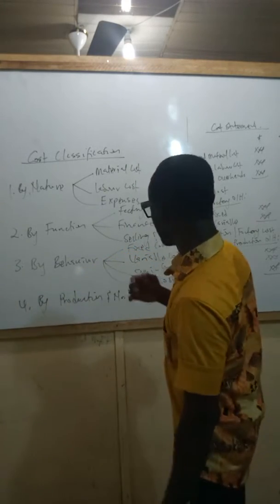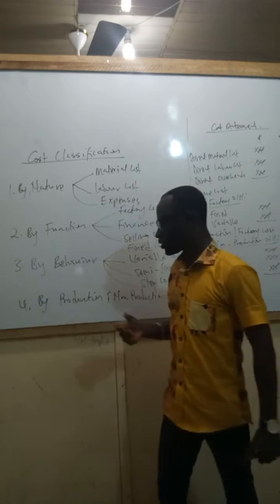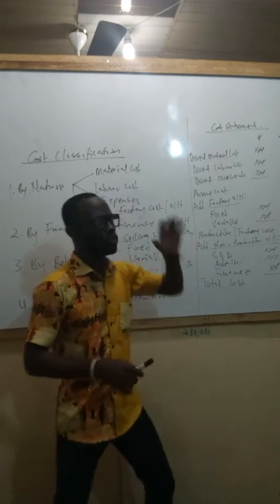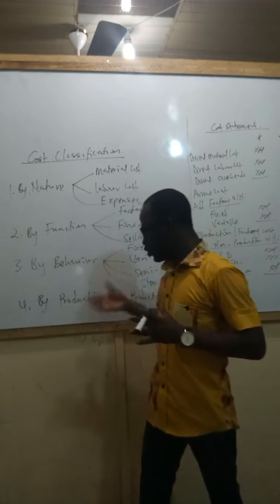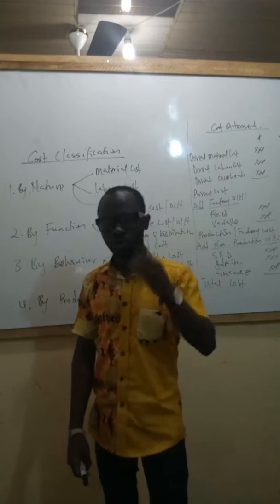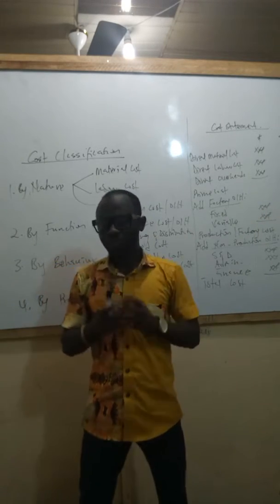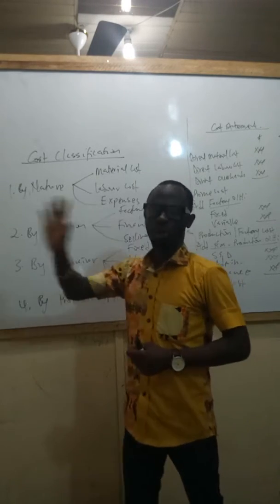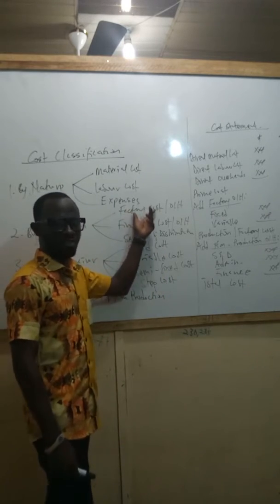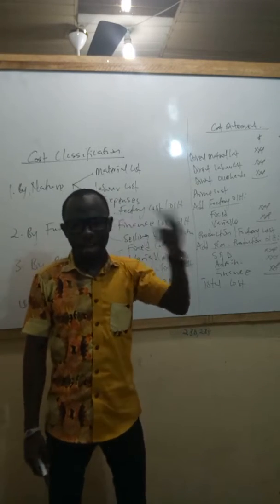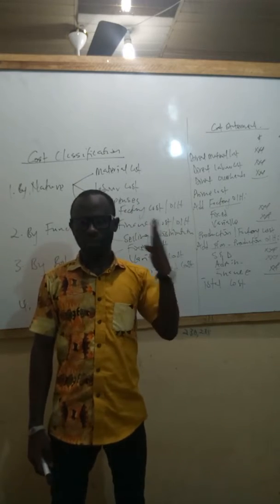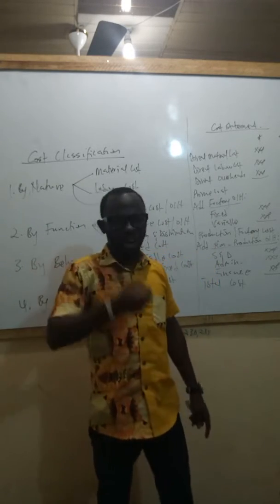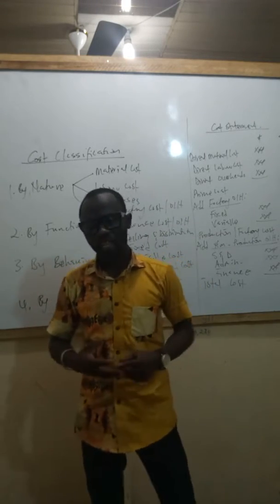The fourth base of classification is classification of cost according to production and non-production. This is where we classify all costs into production costs and non-production costs. When we incur a cost, we ask ourselves: does this cost relate to production? If it does, we classify it as production costs. If it doesn't relate to production, we classify it as non-production costs. All costs incurred in the factory - material costs, direct labor costs, direct expenses, and factory overheads on the production of the products - become production costs. Any other cost not directly related to production is classified as non-production costs.